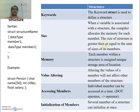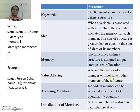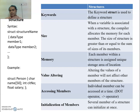The size of a structure is greater than or equal to the sum of the sizes of its members — generally it is equal to that sum. Each member within a structure is assigned a unique storage location; the memory is not shared. Therefore, altering the value of one member will not affect other members, since they each occupy separate memory locations.